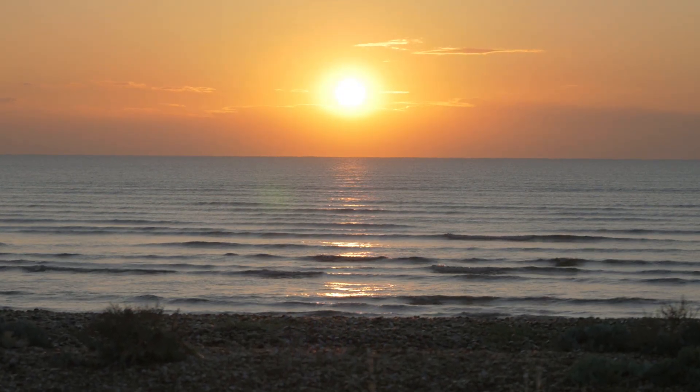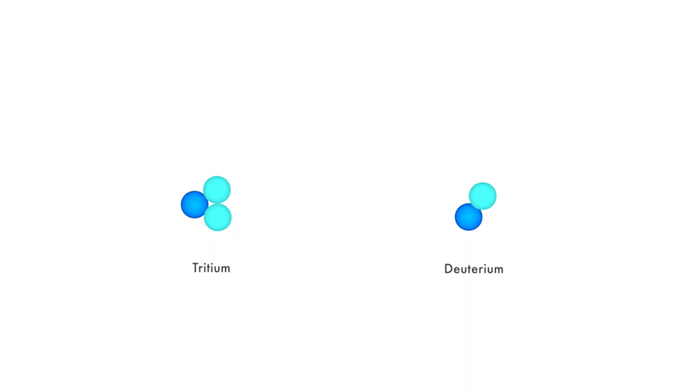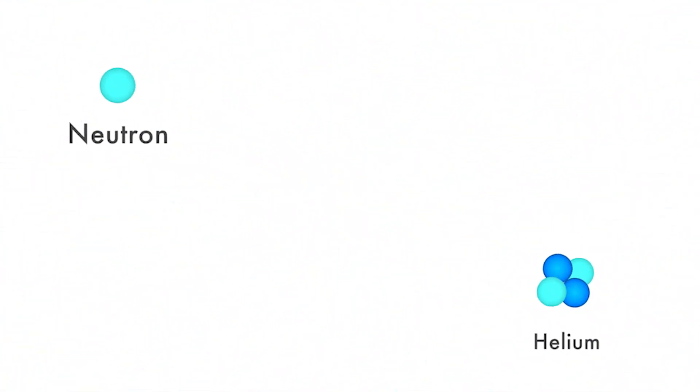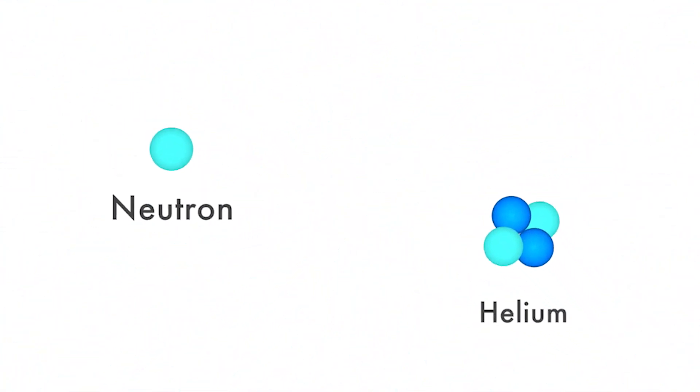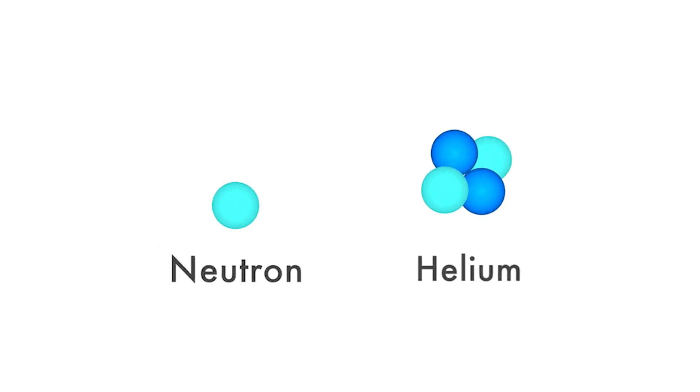So we use bigger building blocks: deuterium and tritium, both types of heavy hydrogen. We will fuse these together to make helium and a neutron and lots of energy. But bigger building blocks mean we need higher temperatures to get them to fuse.